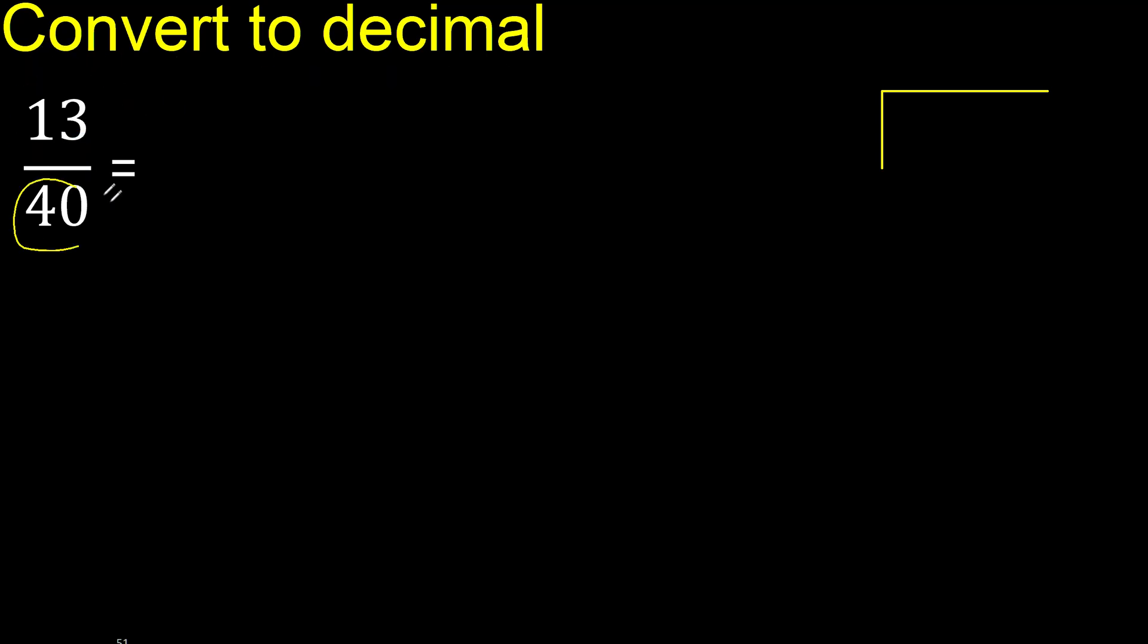13 divided by 40. 13 is less, therefore complete. Always complete with 0. Here 0 point, is not less.